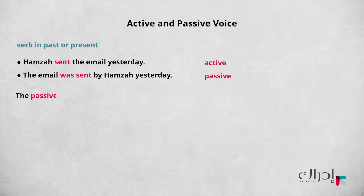The passive form is created by combining the verb 'to be' and the past participle. So the past simple active verb form 'sent' becomes 'was sent' to make the passive form. So if our two sentences about Hamza and his email say the same thing, why does it matter which one we use?